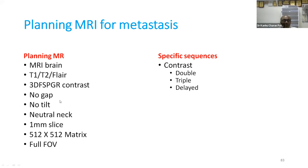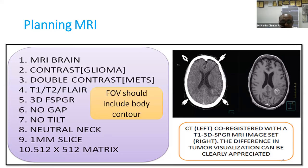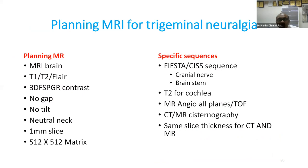For planning MRI, always request T1, T2, 3D FSPGR with no gap, no tilt, neutral neck, 1mm slice, 512 matrix, and full FOV — this is standard for all planning MRIs. For metastasis planning specifically, add double contrast, triple contrast, and delayed contrast.